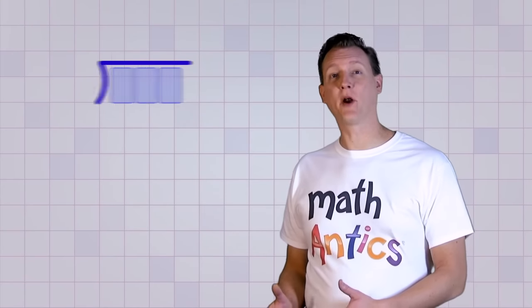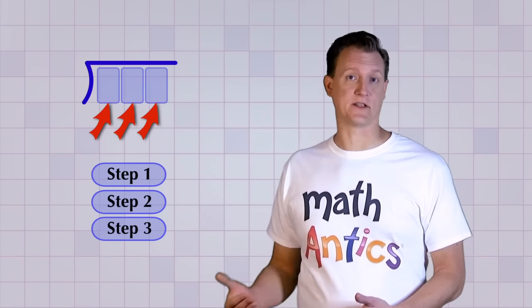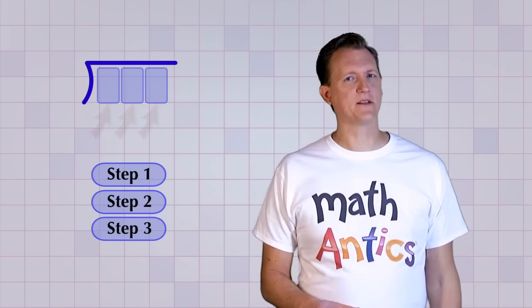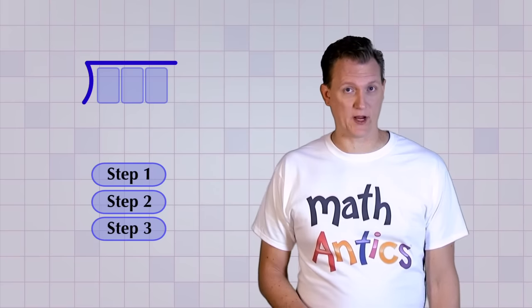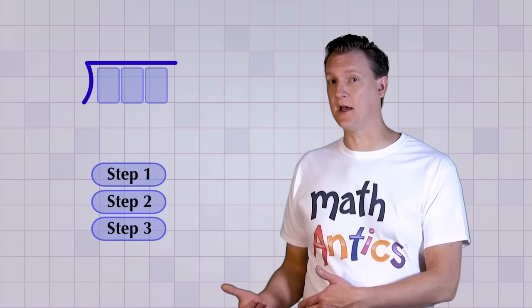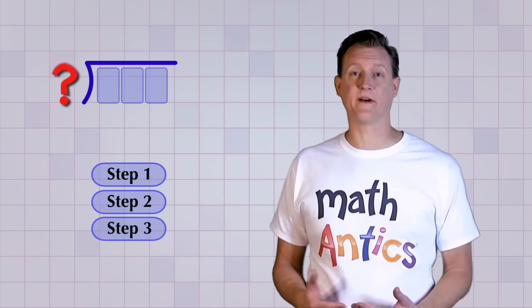Okay, so that problem had a 3 digit dividend, and it also had 3 division steps. But the number of steps isn't always the same as the number of digits we have. And that's because the number of steps also depends on how big our divisor is.